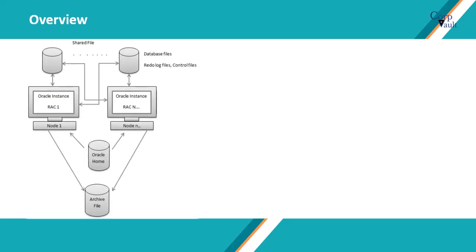Before we proceed with Commvault configuration, let's get an overview of Oracle RAC setup. Oracle RAC configuration might look like this. For this video, let's say we have a two-node Oracle RAC configuration. Oracle RAC is like an application cluster which helps load balance. Install Commvault Oracle iData Agent on both the nodes. Oracle RAC backups in Commvault are configured via a pseudo client. We will discuss about it in a bit.